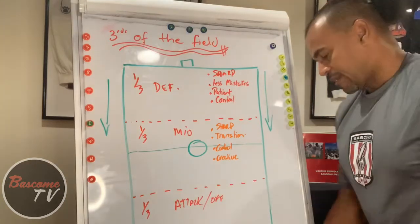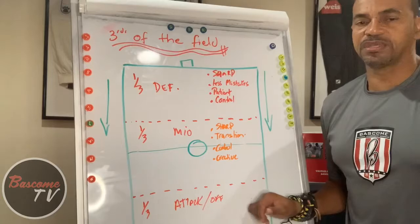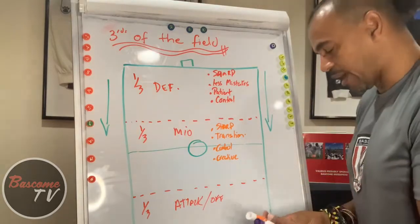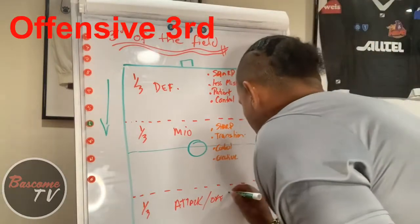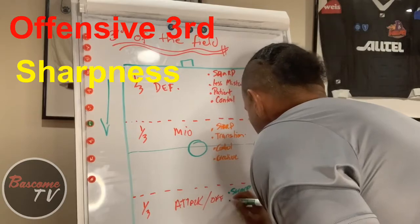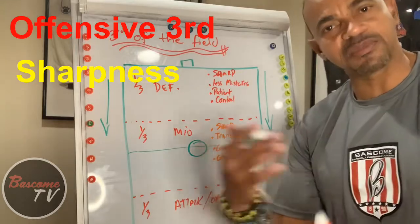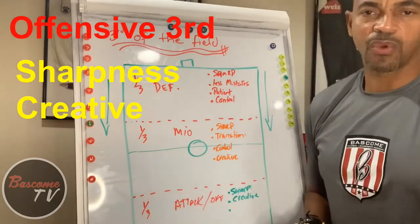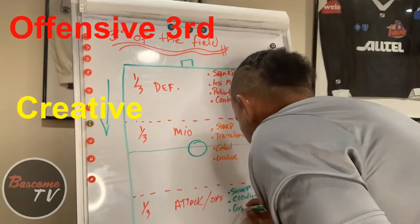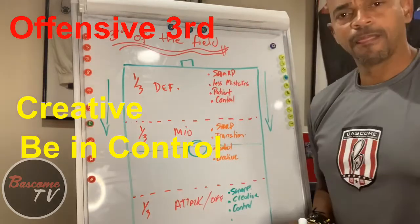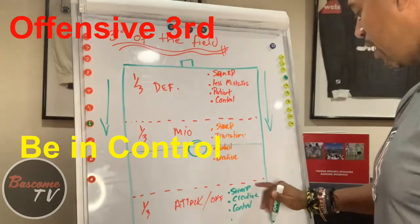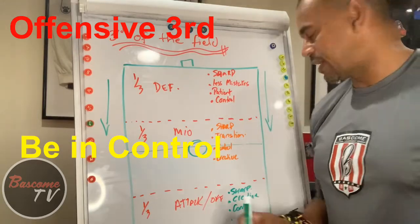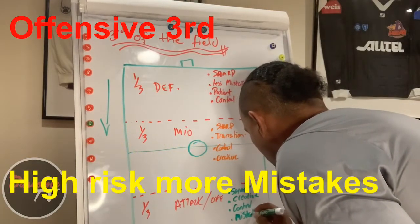Now let's look at the attacking third. Once you get into this area, you've got to be even sharper — the other team is trying to stop you from scoring. Do you have to be creative? Yes, because it's part of your execution. You still have to play under control — if you can't go forward, you go back. So in the attacking area we have: sharp, creative, and control. And yes, we are going to make plenty of mistakes in this area.